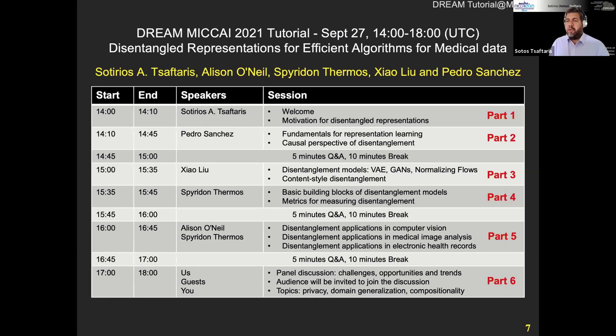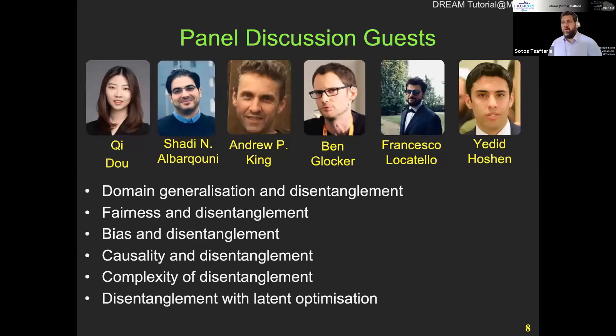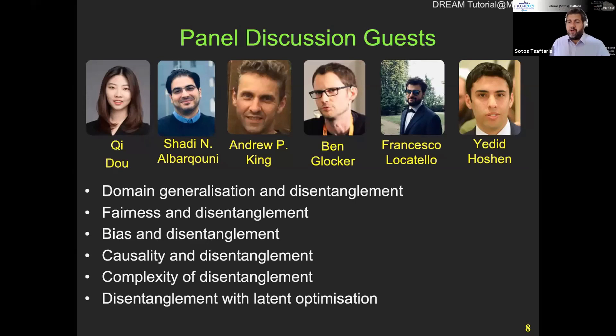After a short break, stay on the same session — Alison and Spiros will talk about applications. Then another final short break, and then we have the roundtable with several guests. We will have some guests with known faces from the UK community, like Shadi, Andy King, Ben Glocker, but also from the broader computer vision and machine learning community. We will have material from Francesco Locatello, who is very well known in disentanglement, and also Yedid Hoshan, who will talk about his work on latent optimization.